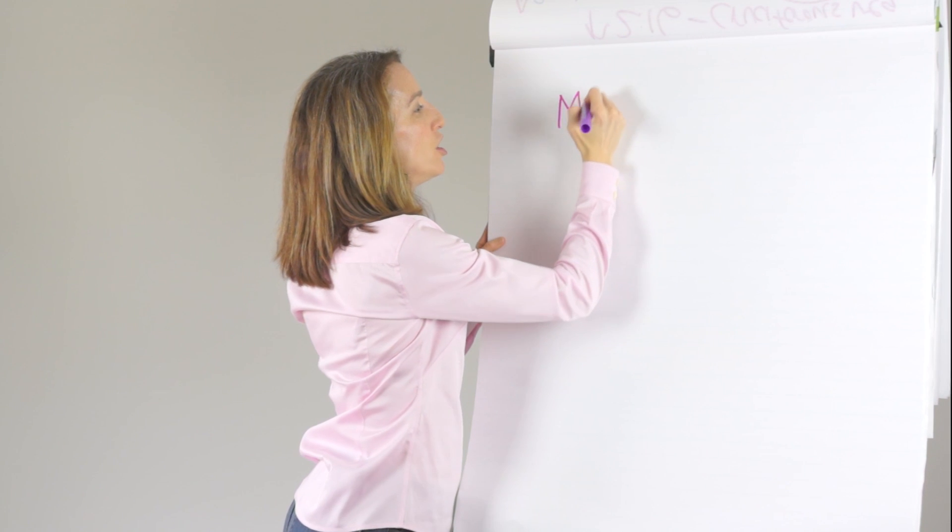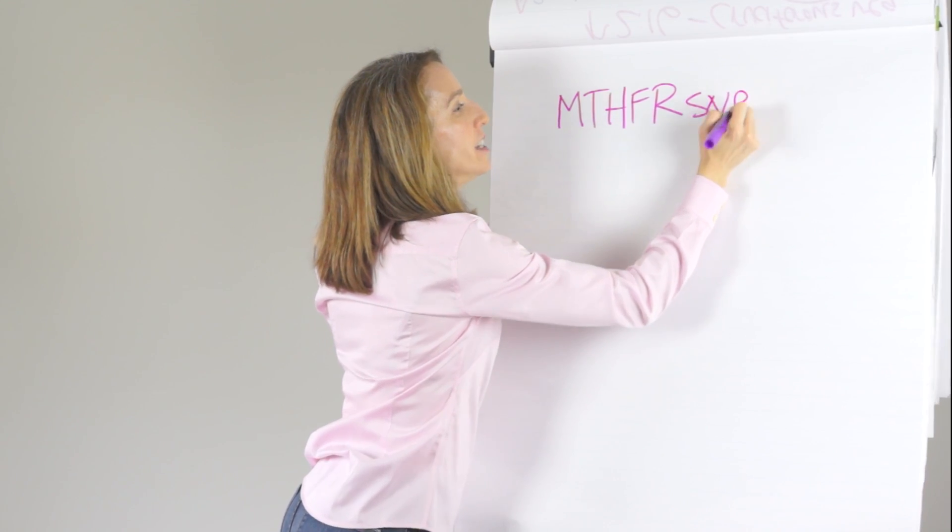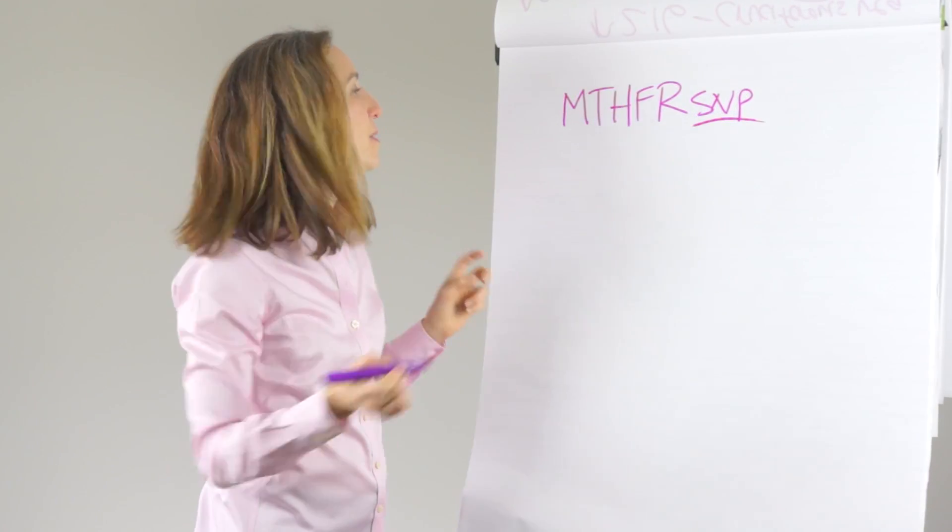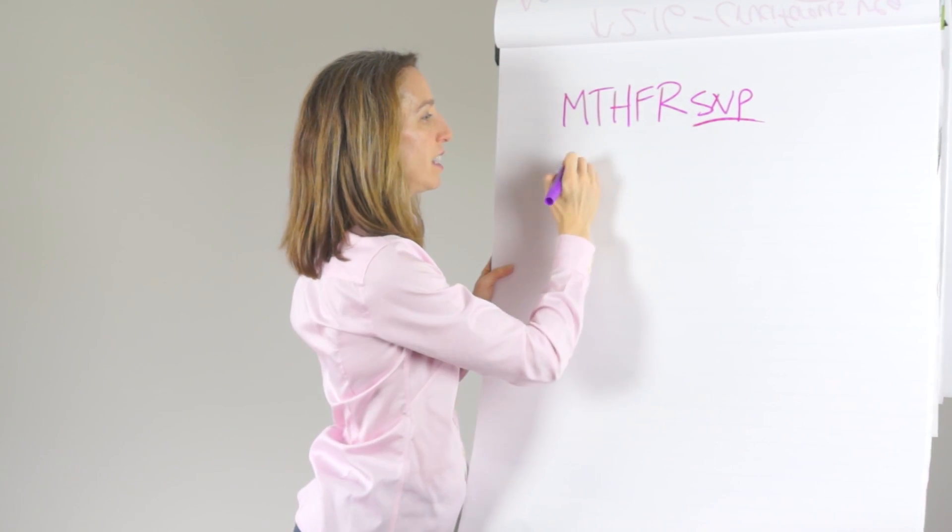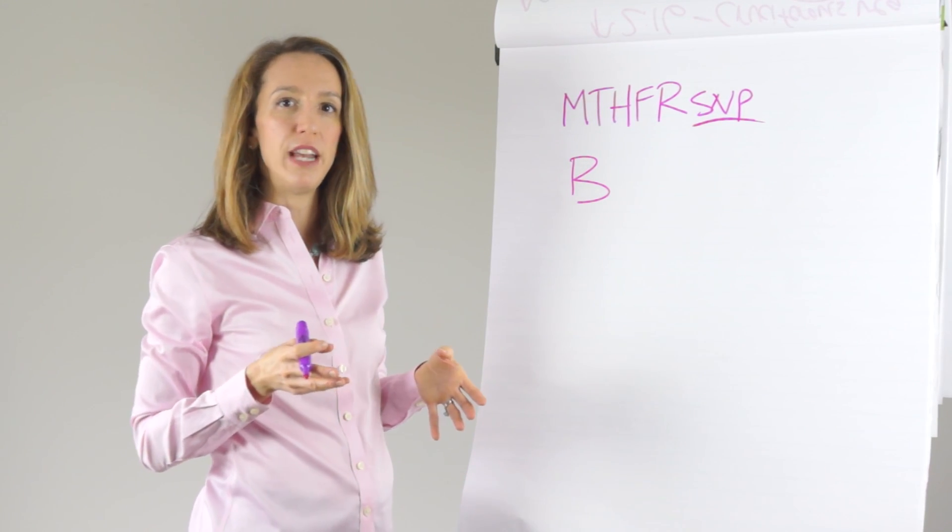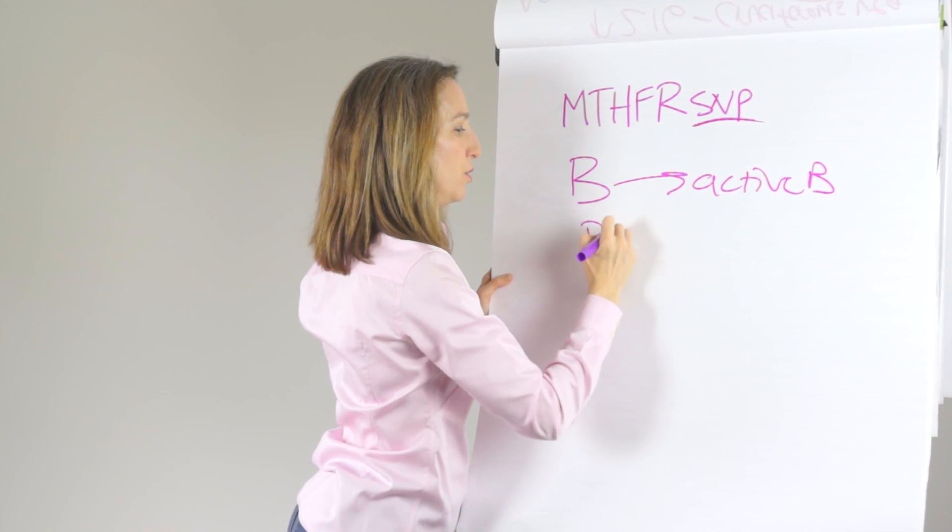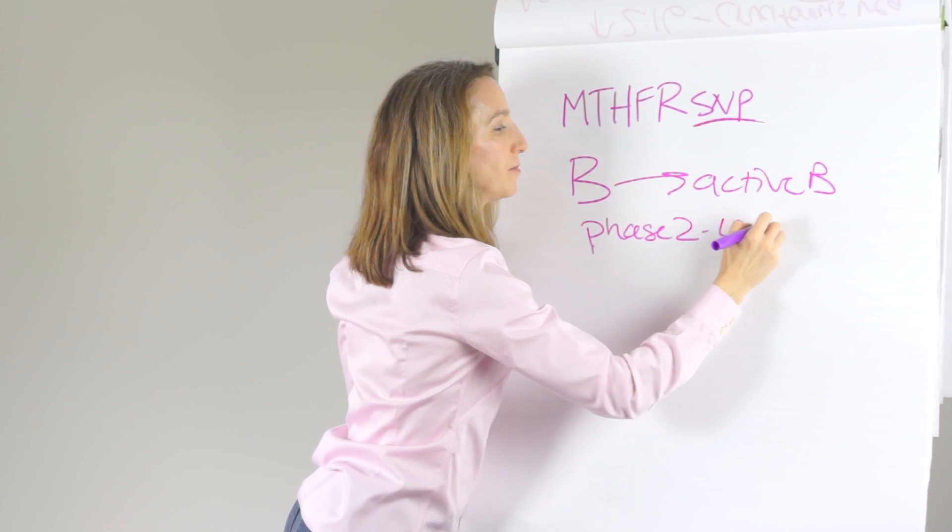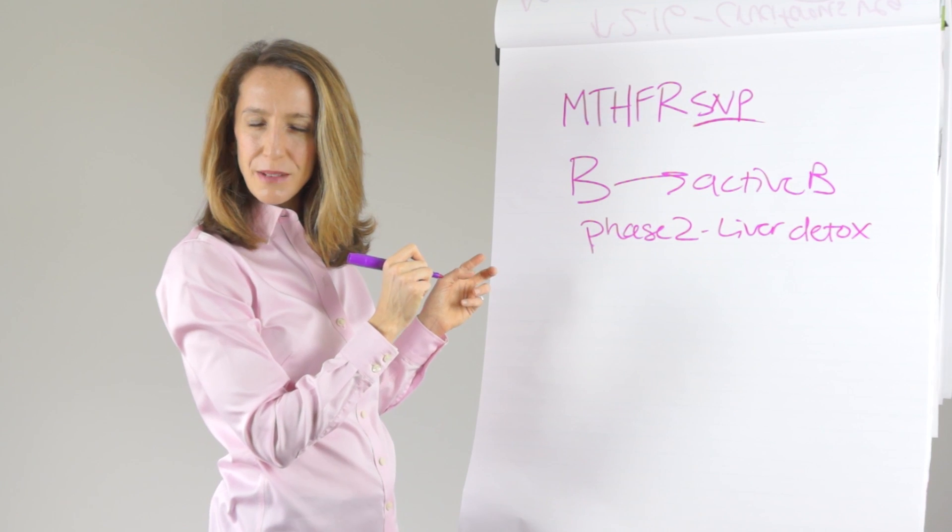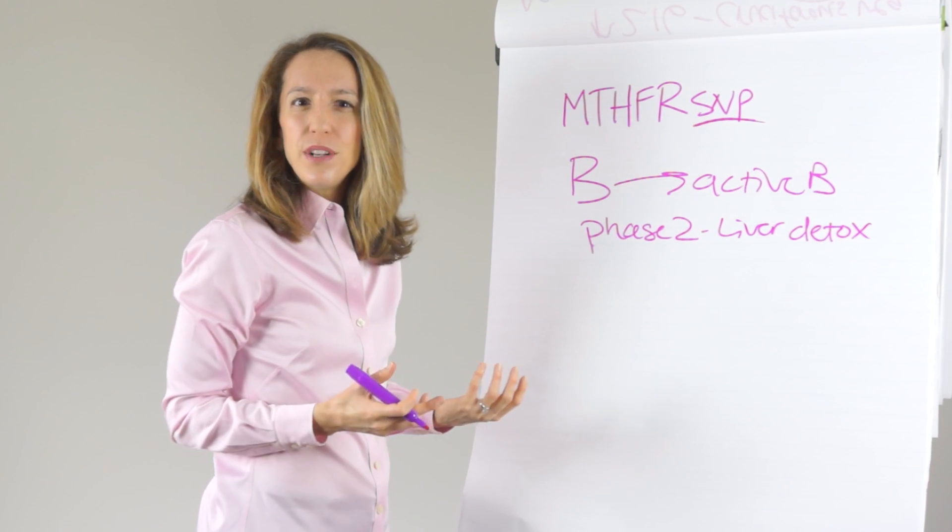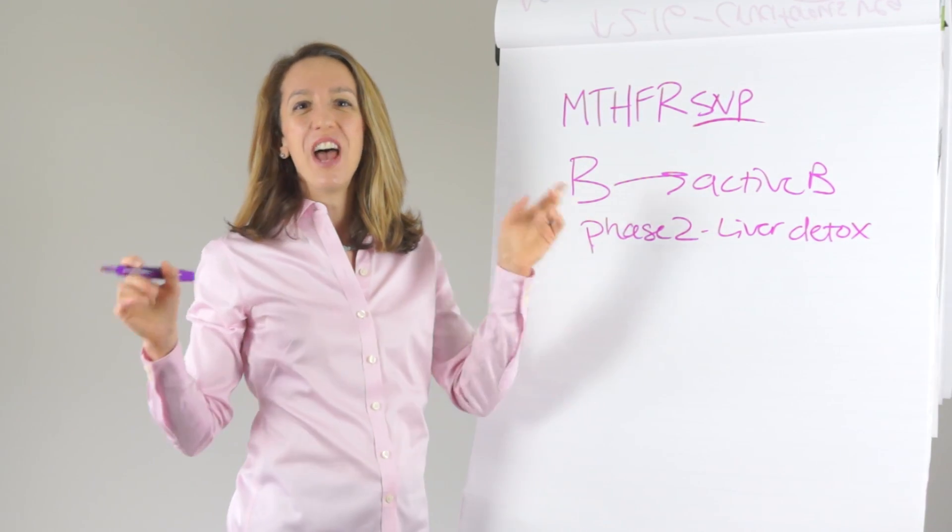There are two things we're concerned about with phase 2 of liver detox and getting all of this stuff all the way out. In phase 2, some people have a genetic issue where there is a SNP, single nucleotide polymorphism, of this gene MTHFR, which makes it challenging for them to convert B vitamins into the active form of B that helps with phase 2 of liver detox. And that's about 60% of Americans.